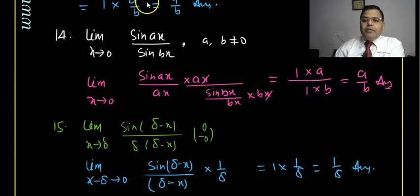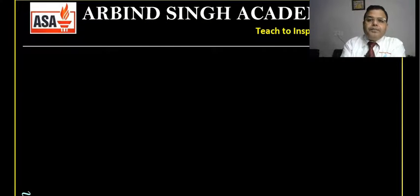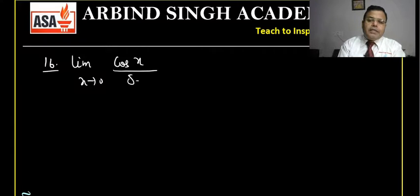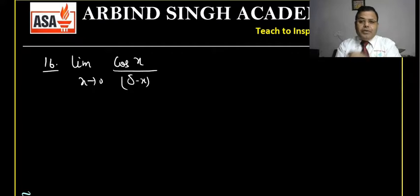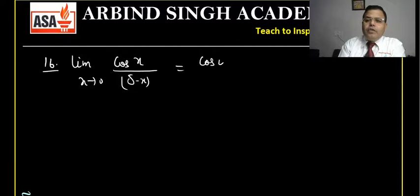Question 16: limit as x tends to 0 of cos(x)/(δ − x). Substituting x = 0 directly: cos(0)/(δ − 0) = 1/δ. There is no problem here at all, so 1/δ is the answer.